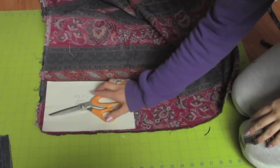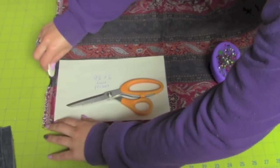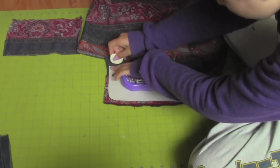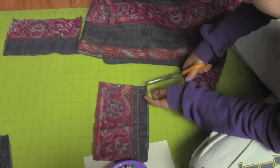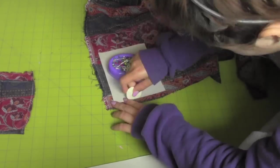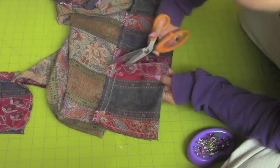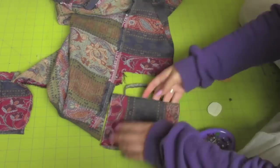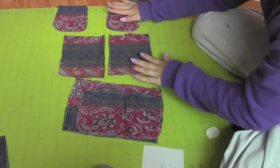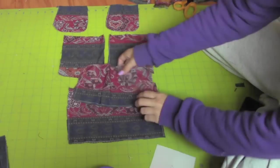Now trace and cut the pocket and pocket flaps on your accent fabric. Now you should have two side pockets and two side pocket flaps and one front pocket flap and one pocket.